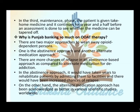In the maintenance phase, patients are given take-home medicine which continues for a year or more, and assessment is done to check if the medicine has tapered. Why is Punjab banking so much on OAAT therapy? There are two major approaches to wean away opiate-dependent persons: abstinence approach and alternate medication approach. There are more chances of relapse in an abstinence-based approach compared to alternate medication for the addiction.